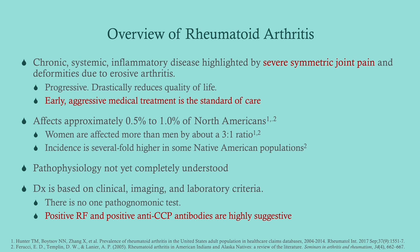Rheumatoid arthritis is chronic, it's systemic, and it's inflammatory. This is something you're going to live with for the rest of your life; it affects more than just the joints. It's inflammatory, so you're going to have an elevated sed rate, and an arthrocentesis would yield joint fluid consistent with inflammatory arthritis. It's highlighted by severe symmetric joint pain — in RA it tends to be small joints, especially the wrists and the hands. It's progressive, reducing quality of life over time.